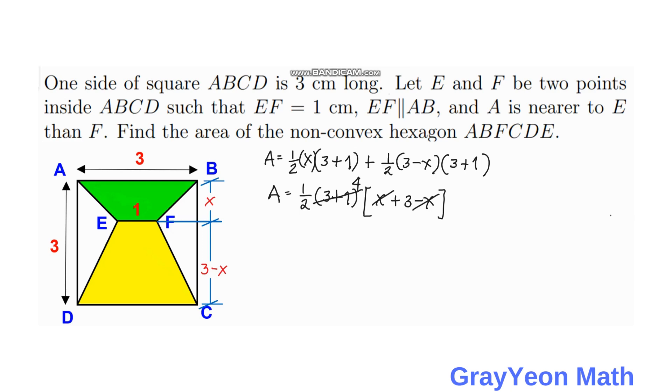Notice that the x cancels out. We have 3 plus 1 equals 4, and we can simplify this to 2. The area equals 2 times 3, so the area is equal to 6 square centimeters, and that is our answer.